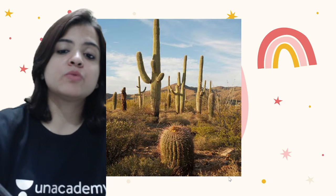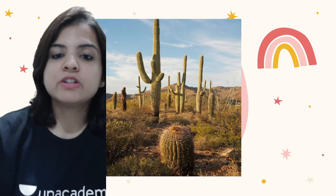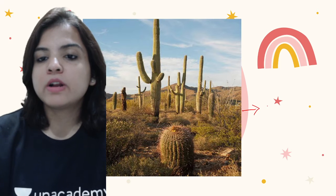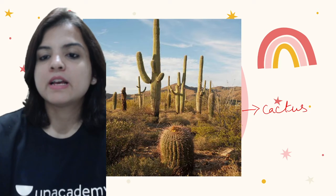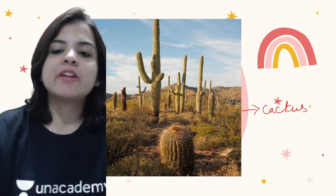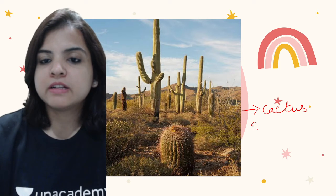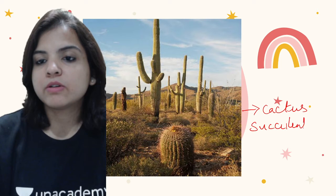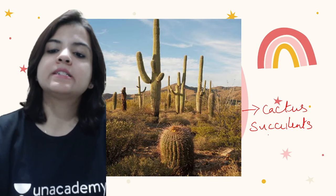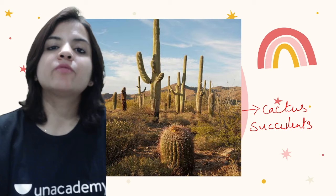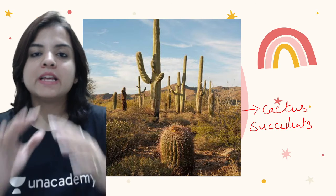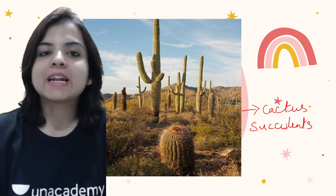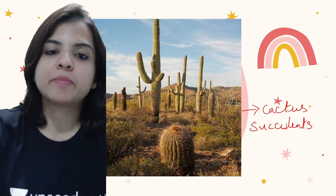The next image is of desert vegetation. Mostly what grows in a desert is cactus and some other plants, but there are different varieties of cactus and other succulent plants. Succulents are plants that accumulate water within themselves and swell up. Cactuses are a type of succulent plant.